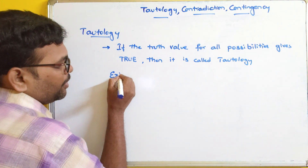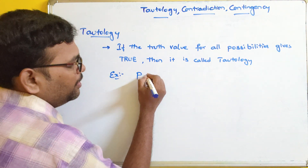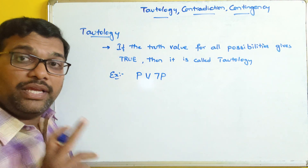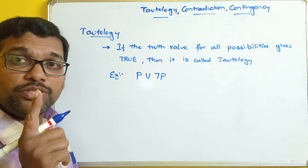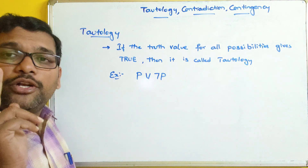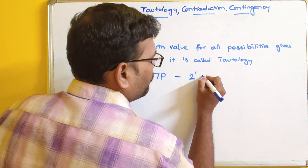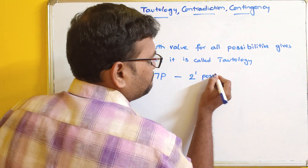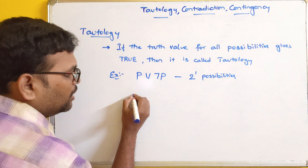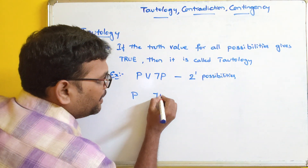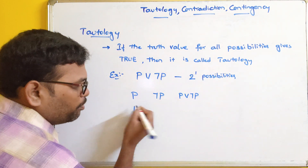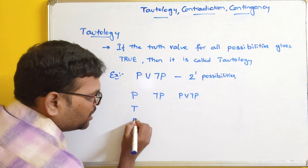For example, let us check with p ∨ ¬p. How many propositions? Only one proposition. So how many possibilities? Only two — that means 2^1 possibilities. We write columns: P, ¬P, P ∨ ¬P. There are only two possibilities: one is true, another one is false.